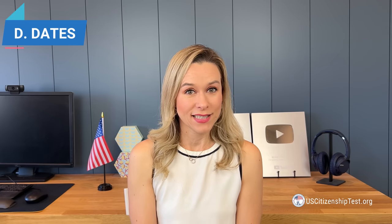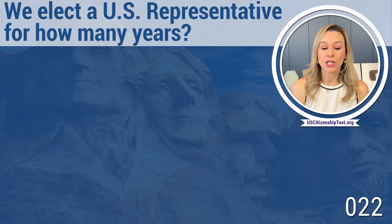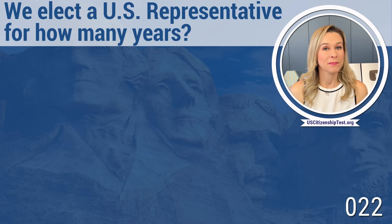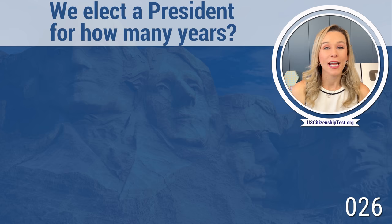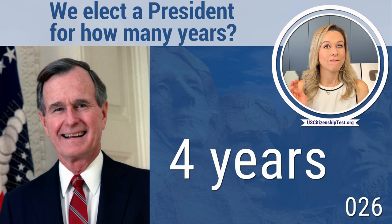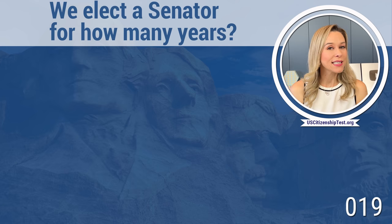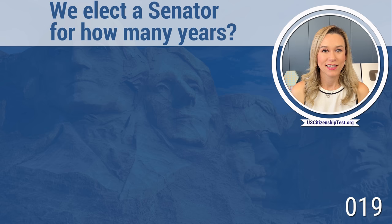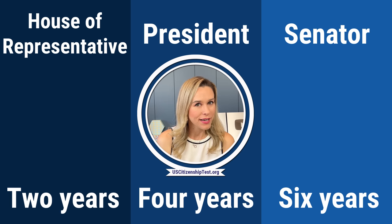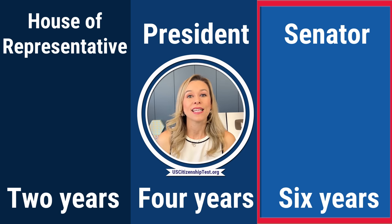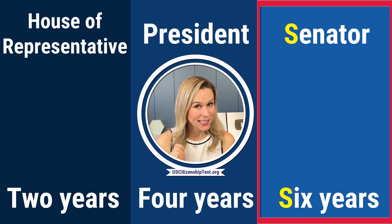Now let's move on to the dates. We elect a U.S. representative for how many years? Two. We elect a president for how many years? Four. We elect a U.S. senator for how many years? Six. So it's 2, 4, 6 — two is the House of Representatives, four is the president, and six is the senator. An easy tip: six and senator both start with S.